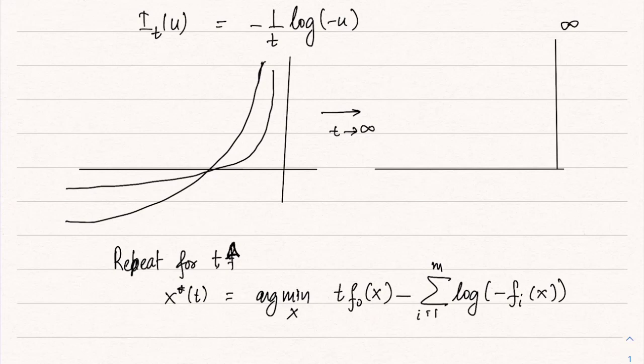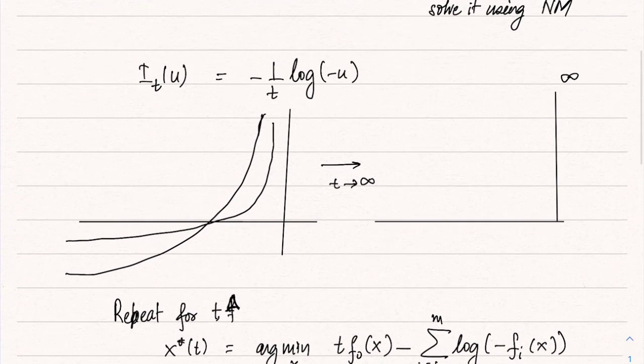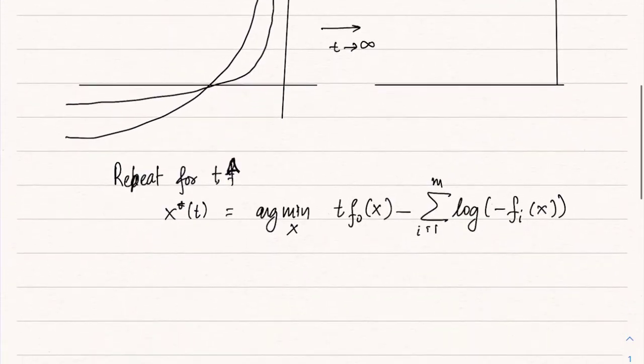t f0 of x minus summation of i equals 1 to m log of minus fi of x. Note that I have just multiplied the whole thing by t instead of writing it minus 1 by t; it is equivalent. I have substituted this definition of barrier function here, and let us call this as φ of x—this is our penalty.